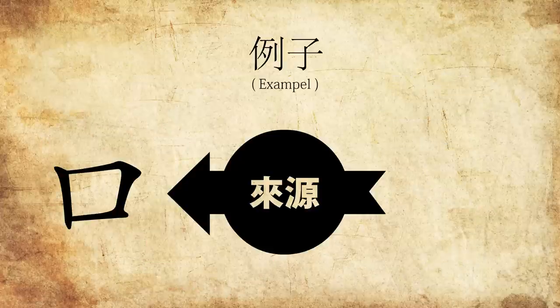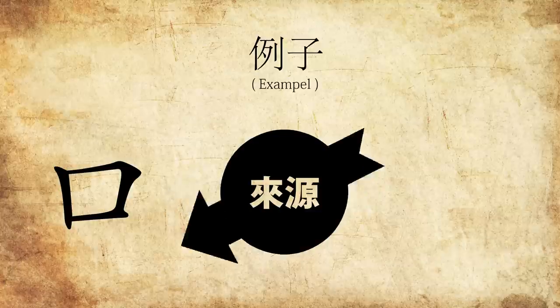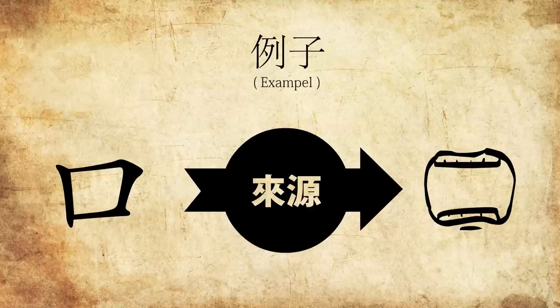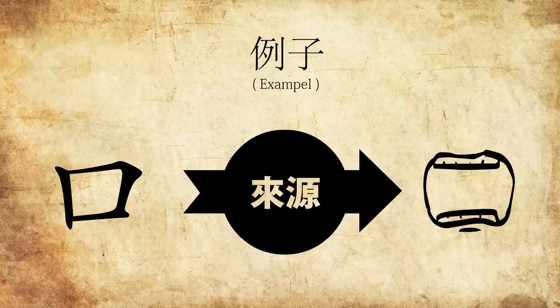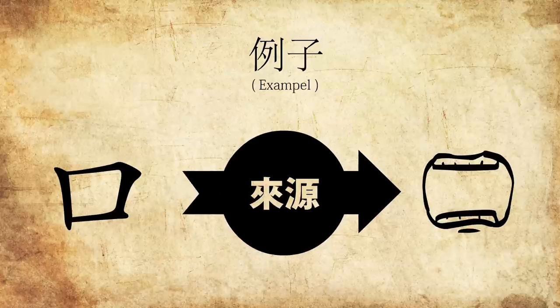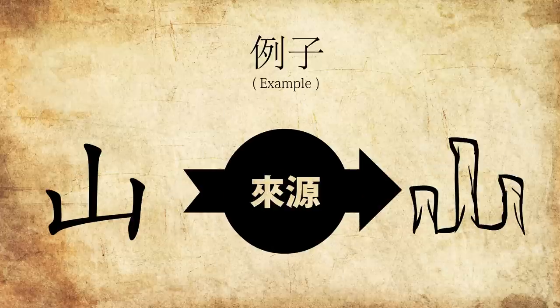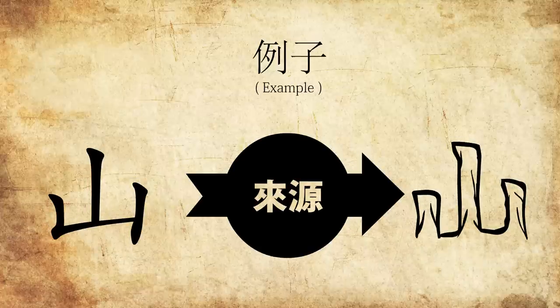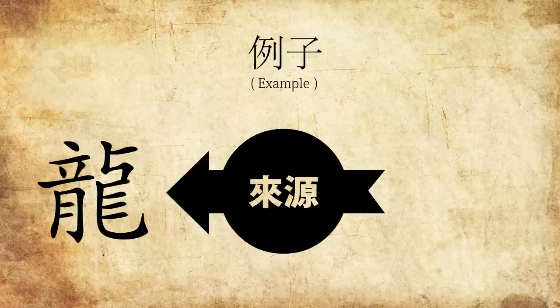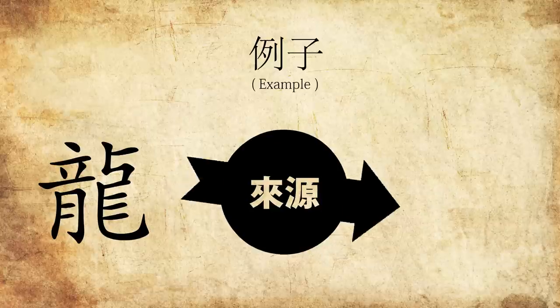For example — it's a mouth. Look, it looks just like the mouth. It's wide open, like you eat hamburger pizza. It's a mountain. You see? Every mountain in the world looks just like this. So simple, okay? Like this one — it's a dragon.